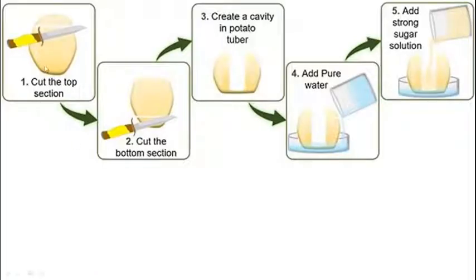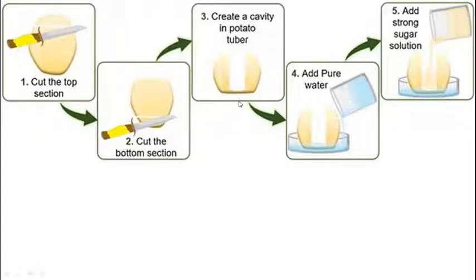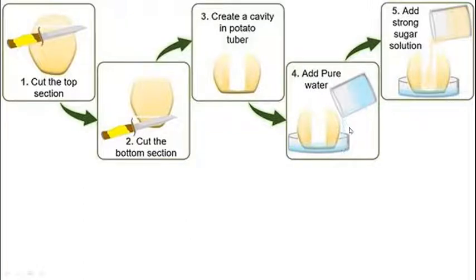एक potato को काटा जाता है, उसके bottom section काटे जाते हैं, और एक cavity निकाल दी जाती है — एक खाली जगह बना दी जाती है। ध्यान रखा जाता है कि cavity की कोई wall break न हो, नीचे वाला portion भी break न हो, क्योंकि यदि breaking आई तो water direct enter कर जाएगा। Potato का portion बिल्कुल safe रखना है जो plasma membrane का काम करेगा। उसके बाद इसको एक beaker में रख लेंगे और उसके अंदर water डाल देंगे, और potato cavity के अंदर sugar solution add करते हैं।